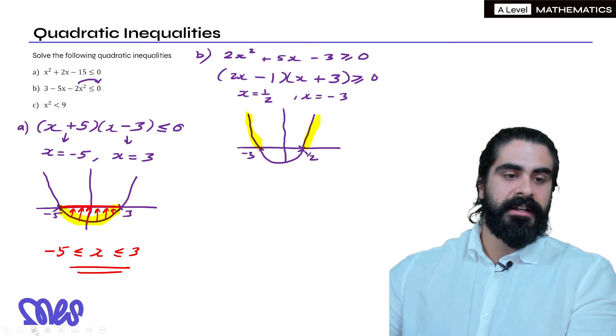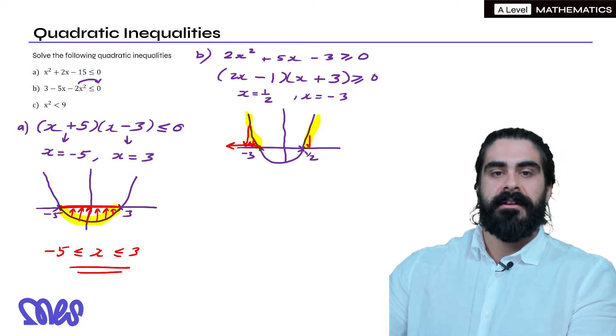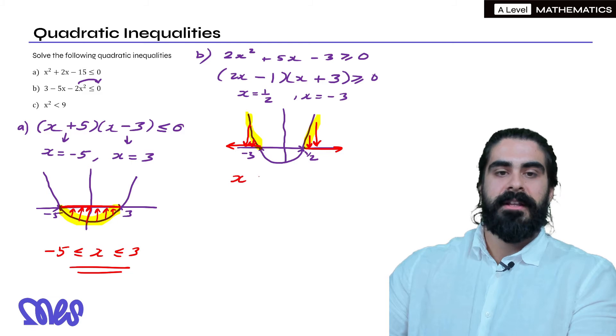Then again we just draw lines straight down to the x-axis and then we treat the x-axis as a number line. So here is clearly anything less than minus 3 and here anything greater than 1 half. So anything less than or equal to minus 3 and anything greater than or equal to 1 half is our solution.